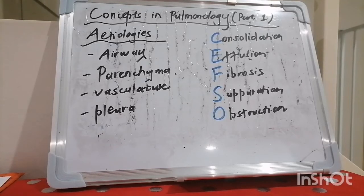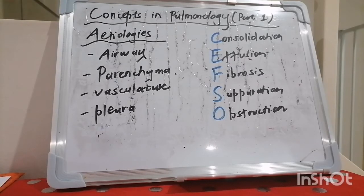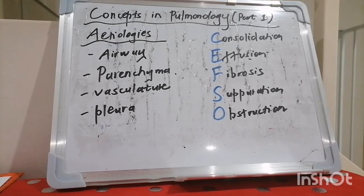Examples of bacterial pneumonia: the notorious Streptococcus pneumoniae, Staph aureus, Haemophilus, and Moraxella catarrhalis. Atypicals like Mycoplasma, Chlamydia, Legionella, and TB — TB is a very important one. Also community-acquired MRSA.